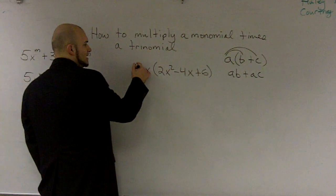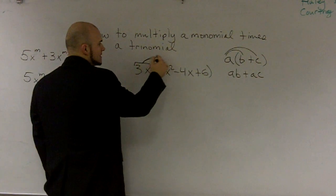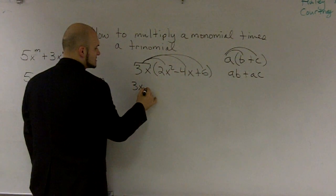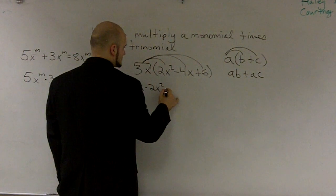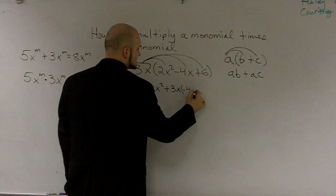So I'm just going to multiply my whole term of 3X times 2X squared, times 4X, and times 6. So I have 3X times 2X squared plus 3X times negative 4X.